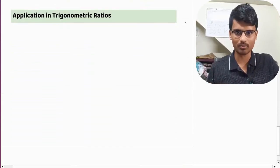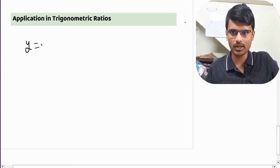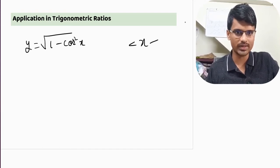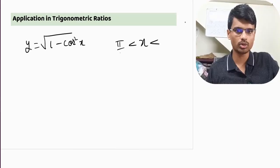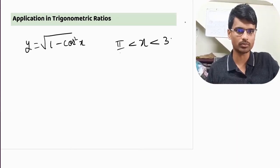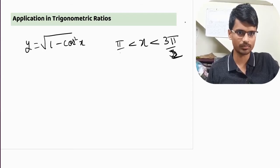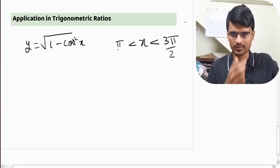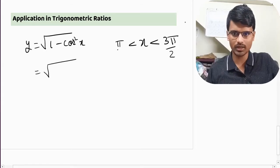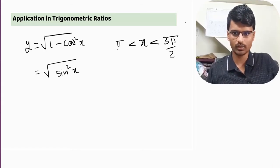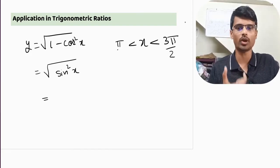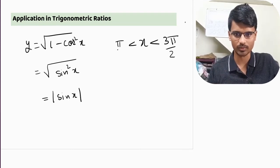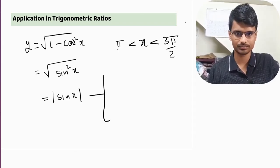Let us see one more interesting example. Let us take trigonometric ratios. Say if we have y equal to root of 1 minus cos square x. How do we solve this? And if they have told us the x value is between pi by 2 to 3 pi by 2. 1 minus cos square is nothing but sin square x. As I have told, we cannot cancel this directly because we do not know what is the value of sin x. If sin x value is negative, then we will be in trouble. So the standard method is just take modulus.